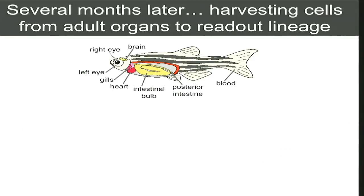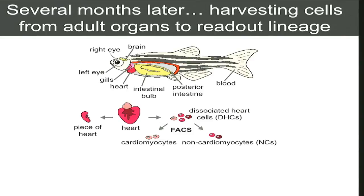It seemed to be working, so we waited a few months and got our adult zebrafish. In the embryo experiments we're just sampling cells and don't know what cells are which. We do a little better here — we're able to separately sample different organs from the fish and look at the alleles that contribute to them. Remember, all of the editing happened early, so we're really looking at those 1,300 or so alleles and what contributions they're making to different organs.